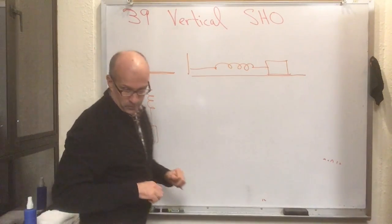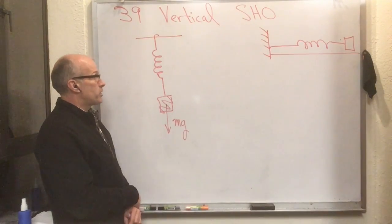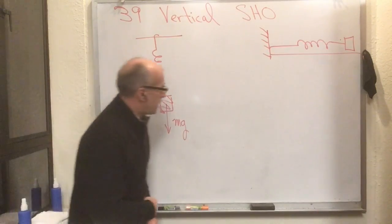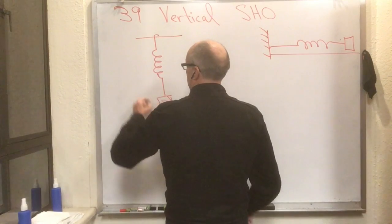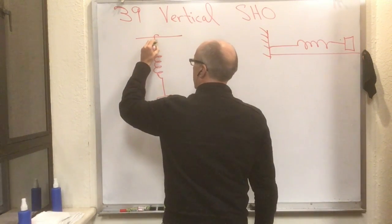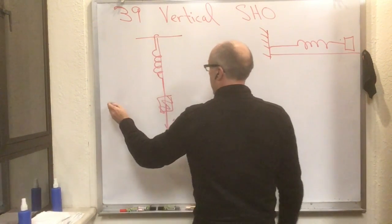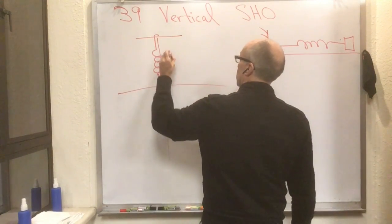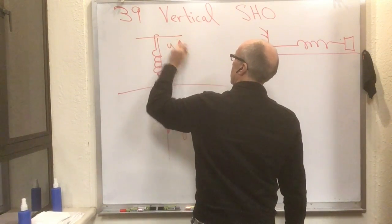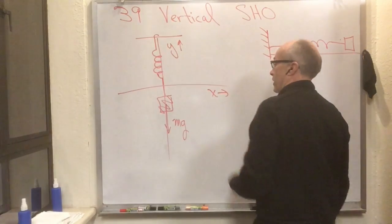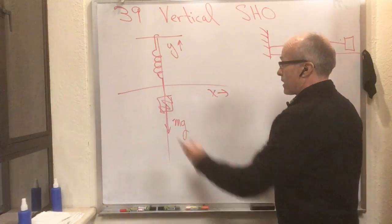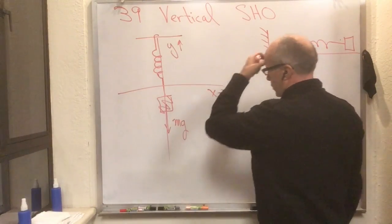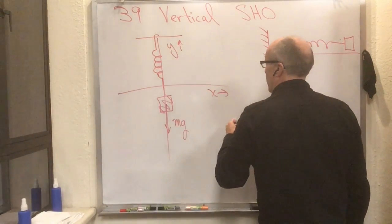Now I need to write down the equation for this. I probably should put a coordinate system here, so we need a usual coordinate system with y up and x in the horizontal direction. Now x is the uninteresting coordinate—things are not moving back and forth in the x direction.